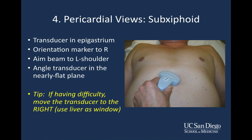The fourth and final view of the basic FAST exam is a quick view around the heart — the sub-xiphoid view. Place the transducer in the epigastrium with the orientation marker towards the patient's right. Aim the beam towards the left shoulder and angle the transducer in a nearly flat plane. One tip: if you're having difficulty getting a good view, slide the probe a little bit to the right — farther from the heart — so you can incorporate more of the liver and use it as an acoustic window to shoot your sound beam into the chest.